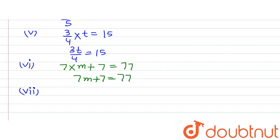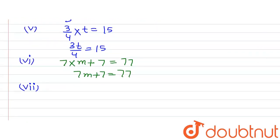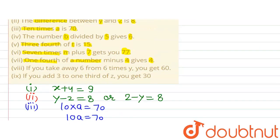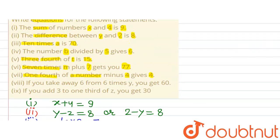In the seventh part, one fourth of a number minus 4 gives 4. Let the number be x. One fourth of x minus 4 equals 4, so the equation is x/4 - 4 = 4.